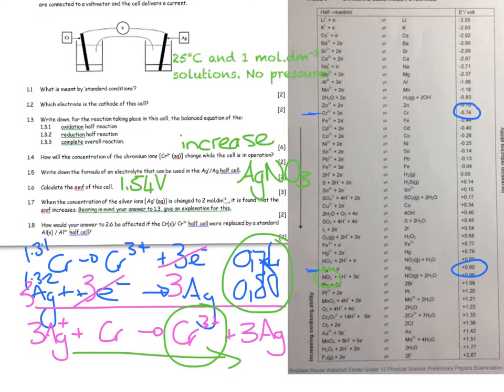When the concentration of silver ions is changed to 2 moles per cubic decimeter, it is found that the EMF increases. If I have an increase in EMF, it means I've shifted the equilibrium and favoured the forward reaction of this particular reaction.